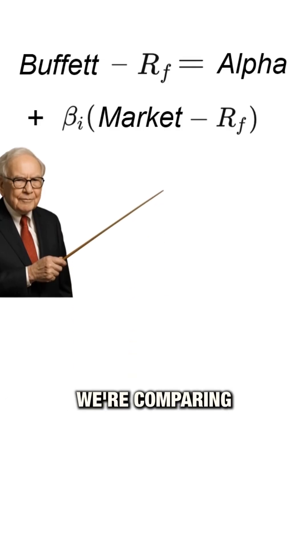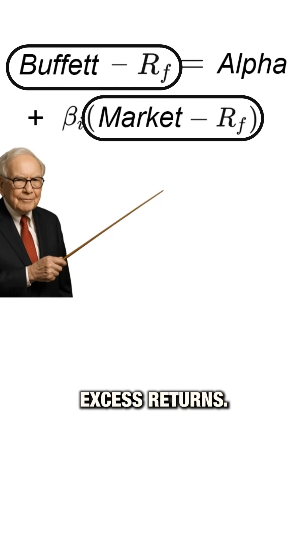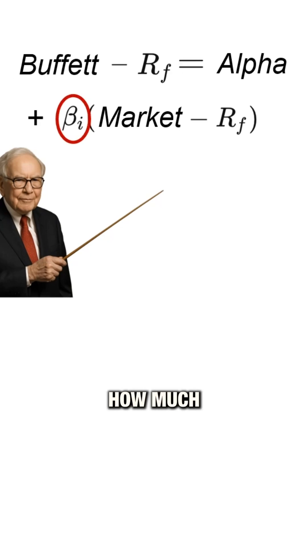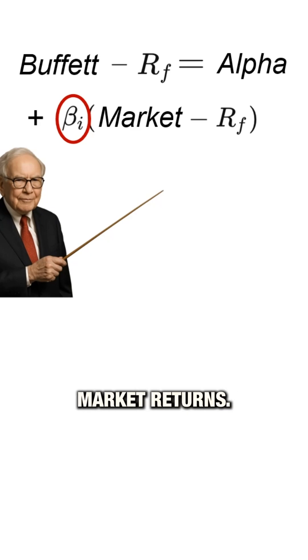In our regression output, we're comparing Buffett's excess returns to the market's excess returns. The beta tells us how much Buffett's returns move with the market — it's captured by the coefficient next to the excess market returns.